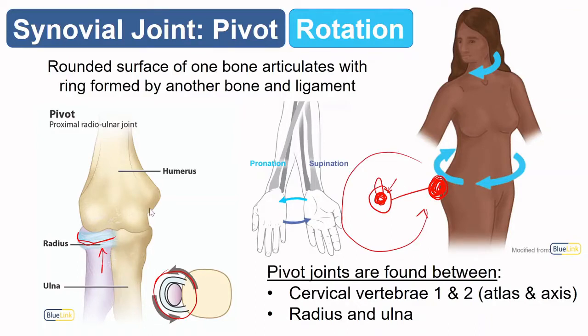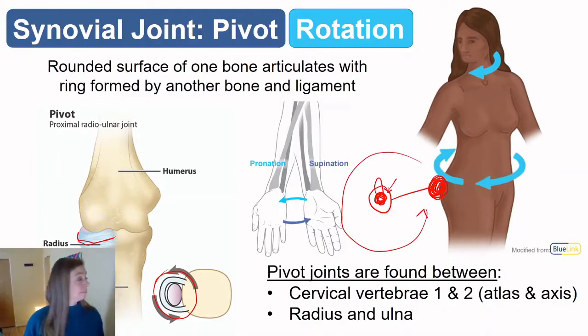The pivot joint at the elbow between the radius and that ligament allows for the palms flipping up and pointing down toward the ground, which is called pronation and supination — something we'll see in the upper limb. We have a similar configuration in the head allowing us to shake our head 'no.'